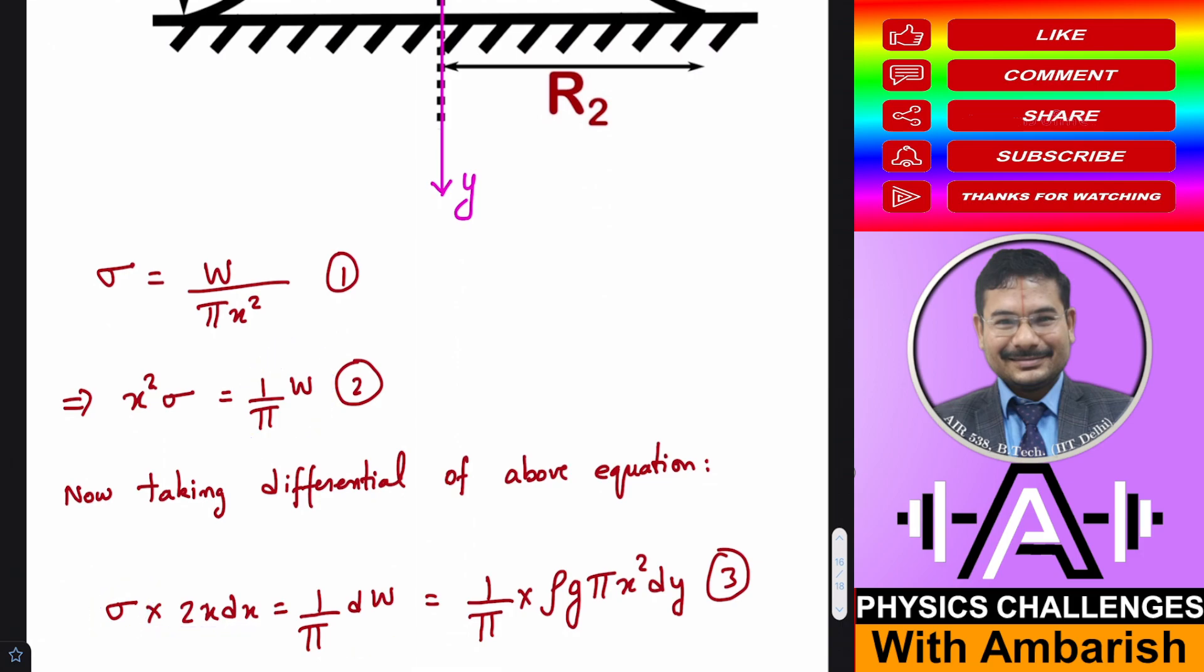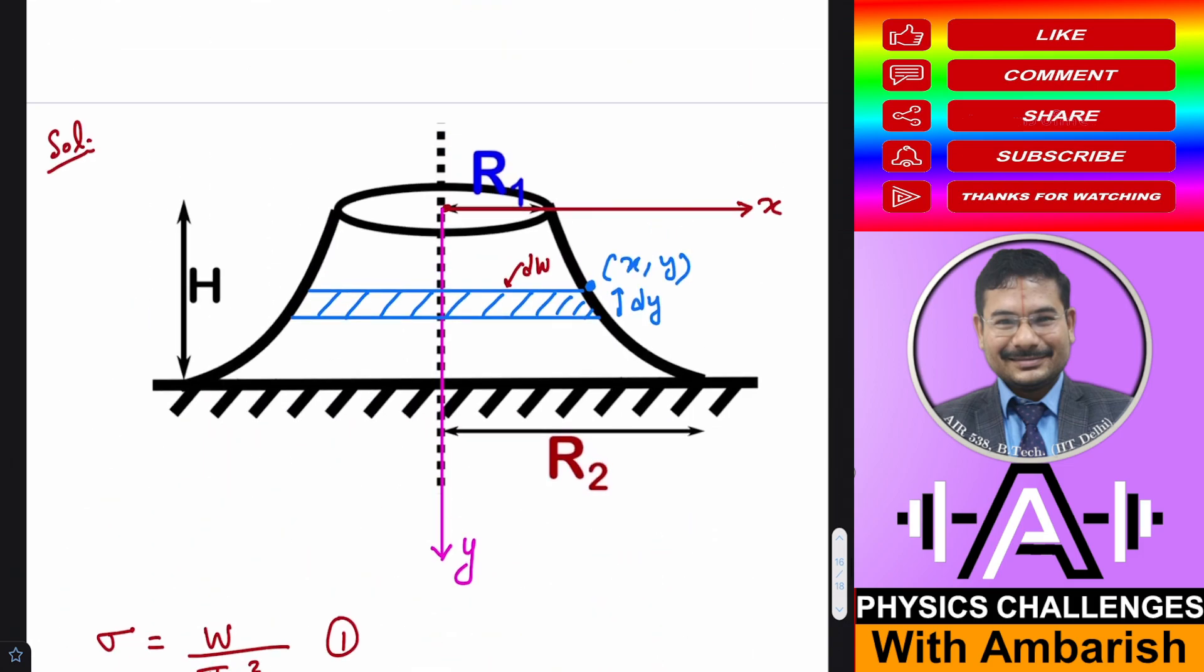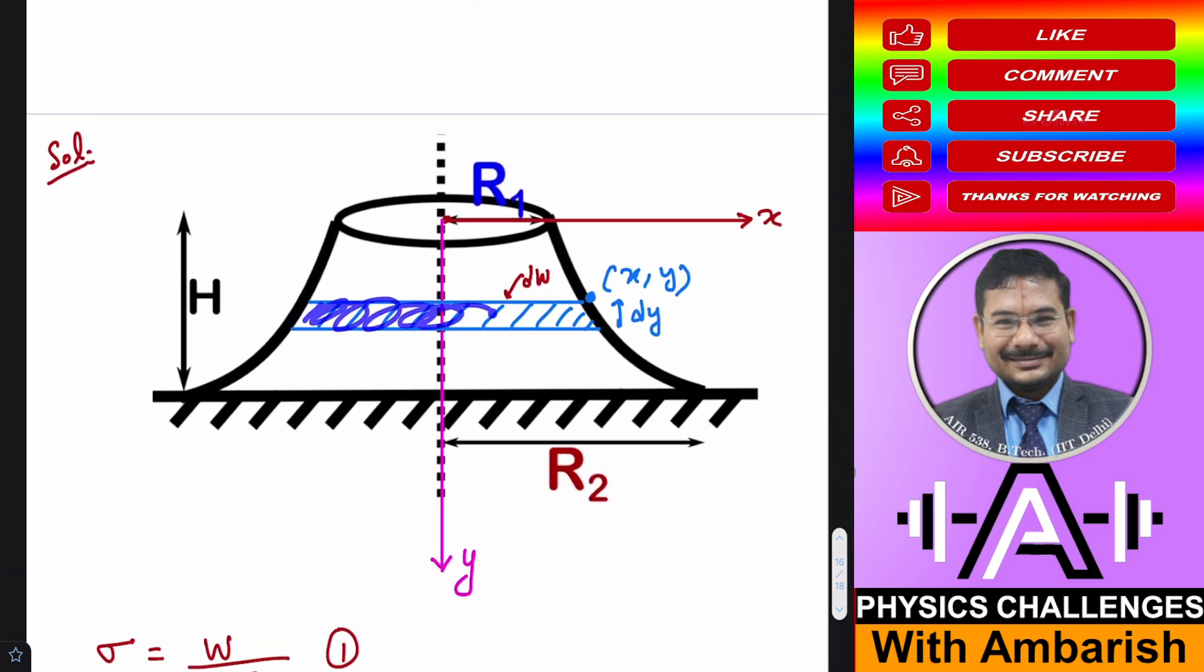Actually, if you want you could have directly written this equation. So let me tell you the physical significance of this equation. So dw is what? dw is this additional weight. So additional weight has to be balanced by additional normal reaction from this place. So additional weight will be how much? You know that additional weight will be